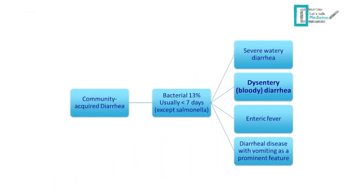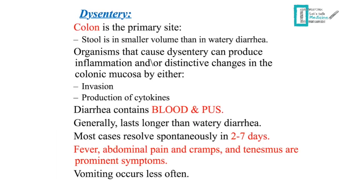Now let's discuss dysentery or bloody diarrhea. The colon is the primary site of action. Since the colon does not absorb as much water, stool volume in dysentery is smaller than in watery diarrhea. Organisms causing dysentery produce inflammation or mucosal damage through direct bacterial invasion into the mucosa or production of cytokines. Mucosal damage causes blood in the stool, and the inflammatory response produces pus.